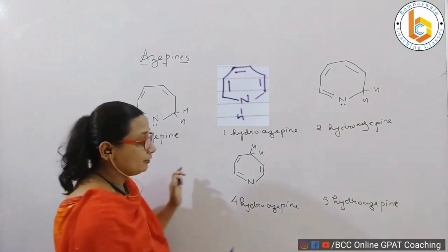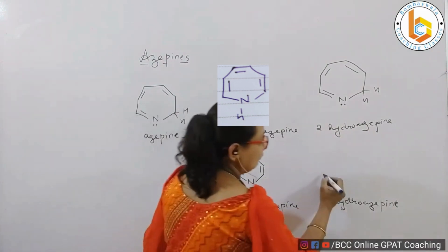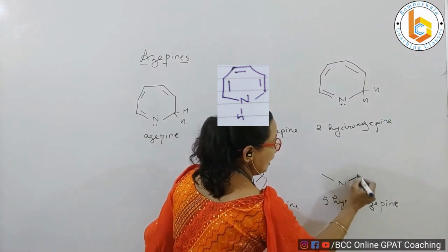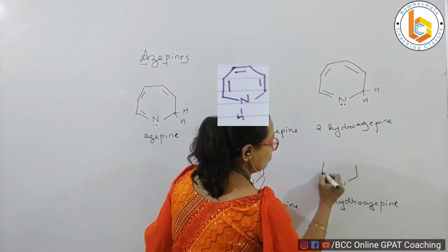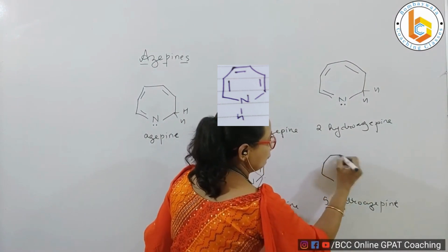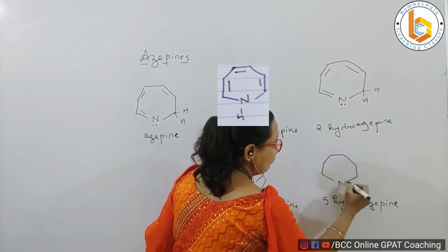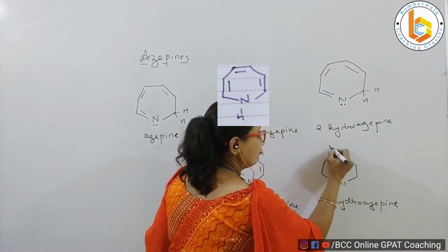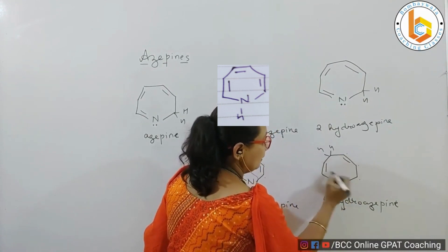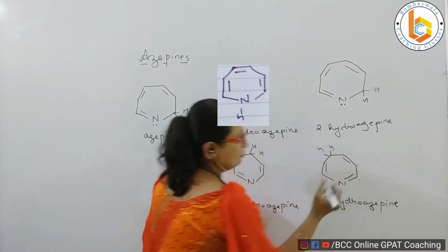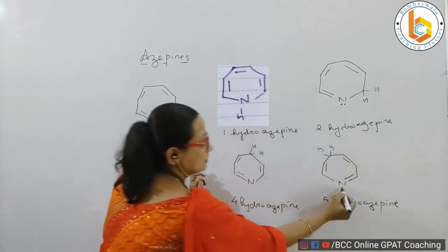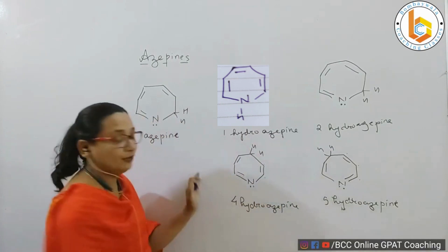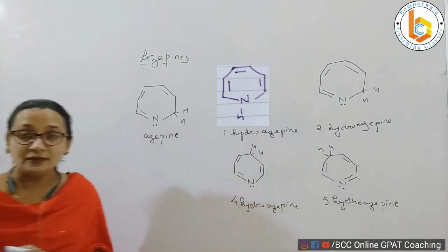If I want to write 5-hydroazepine, this is nitrogen, and the positions are one, two, three, four, five. For five hydrogens, we mean three different forms. This is called 5-hydroazepine.